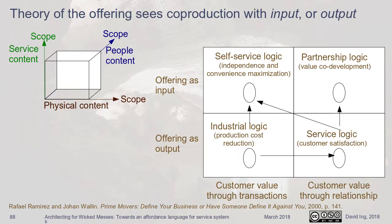In the theory of the offering, there are three dimensions: physical content, service content, and people content. For an automobile: the physical automobile, the service content such as financing, and the people content such as maintenance or the relationship with the dealer. There's an industrial logic where the offering is an output and customer value comes through a transaction. Traditionally with automobiles: you buy the car, after that it's your problem. The customer value through the transaction is that you own the car and can do whatever you want with it.